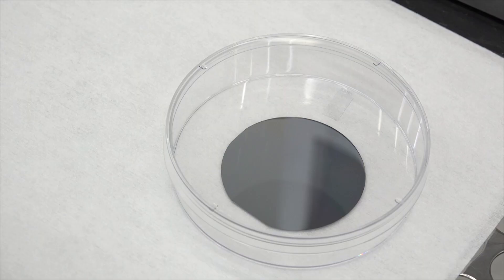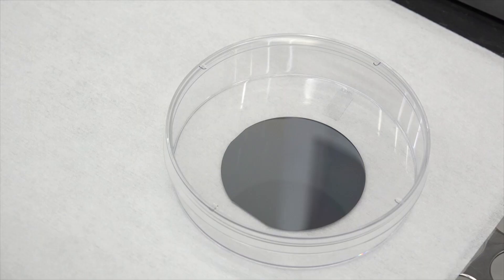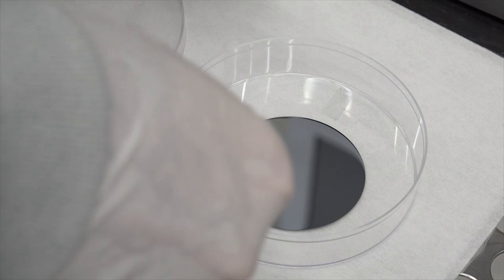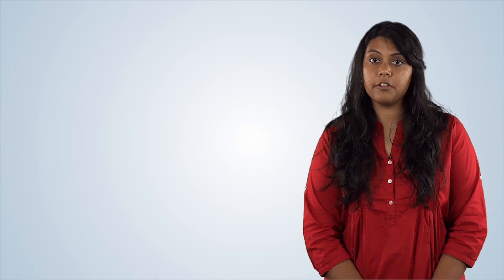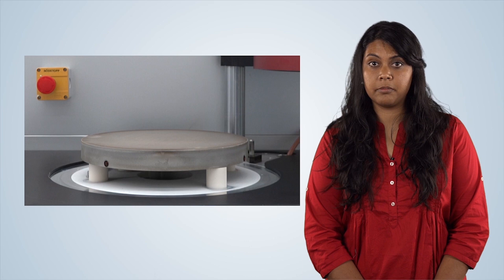We are now ready to load our substrate into the PECVD deposition chamber. We will be using a silicon wafer for our substrate. The wafer will be placed on the platen, which is a heated platform. In this particular system, the platen is maintained at 250 degrees Celsius. Heating the sample assists in the material deposition process. However,